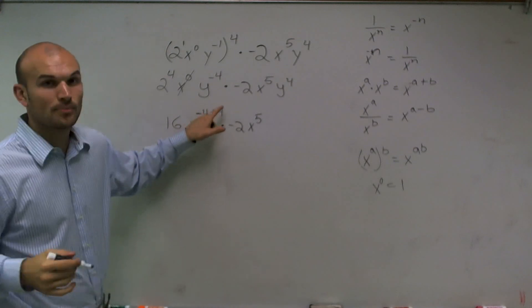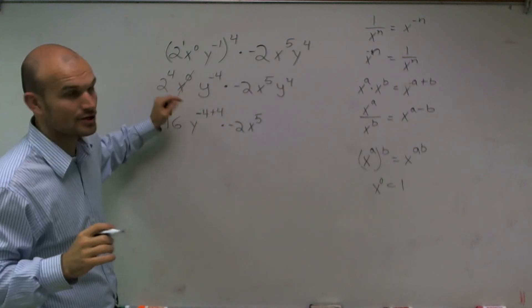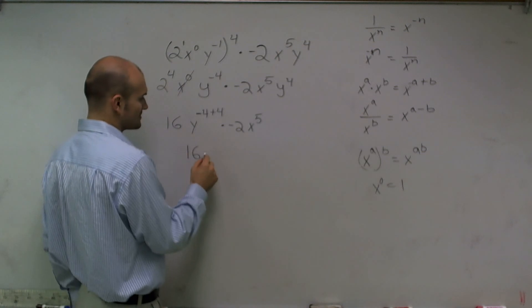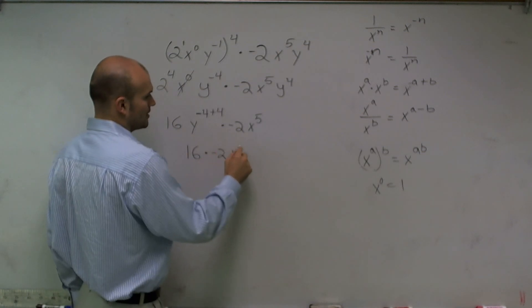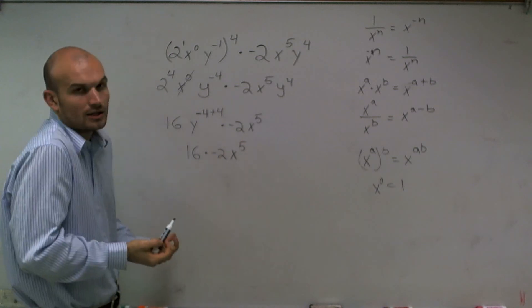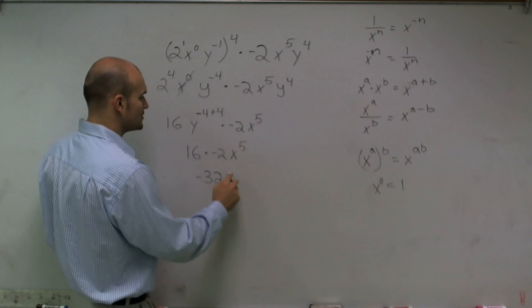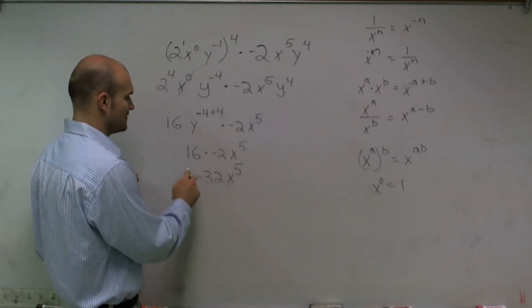Well, a negative 4 plus 4 is going to give me 0 again. And like x to the 0, y to the 0 is going to cancel out. So therefore, I'll be left with 16 times negative 2x to the 5th. Now all I have to do is multiply my 16 times my negative 2, which would give me negative 32 times x to the 5th.